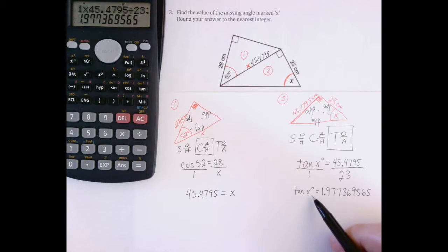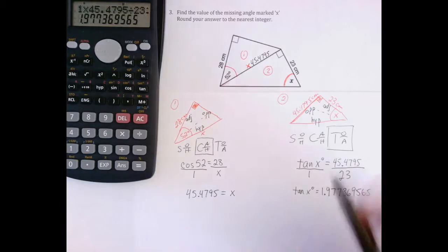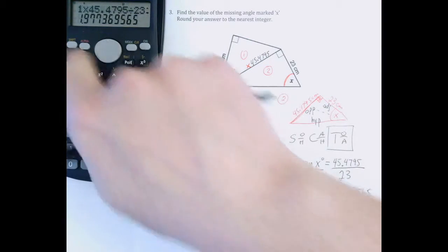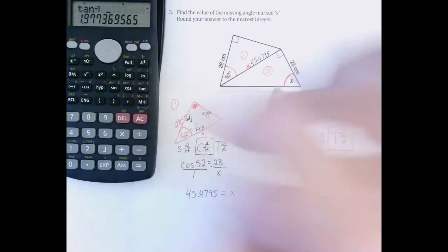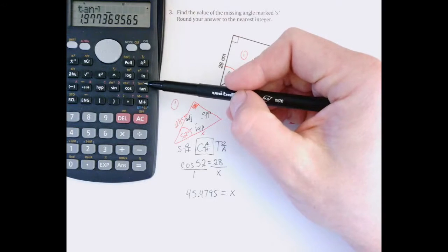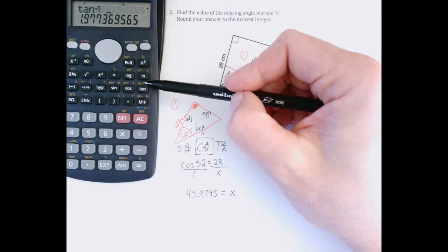1.977369565. That's the tan of x degrees. I want to get rid of this tan. And to do that, on my calculator, I just press shift and then the tan button. That gives me that tan inverse. And that's used to get rid of tan in front of an angle.